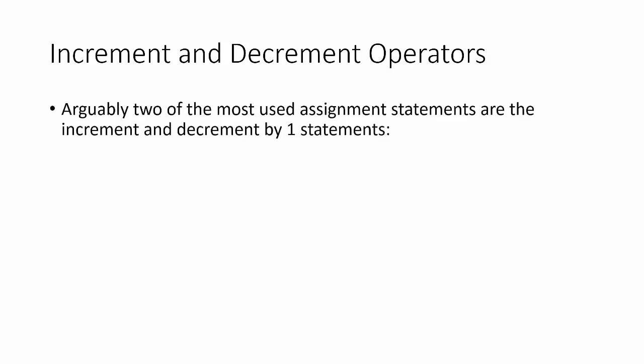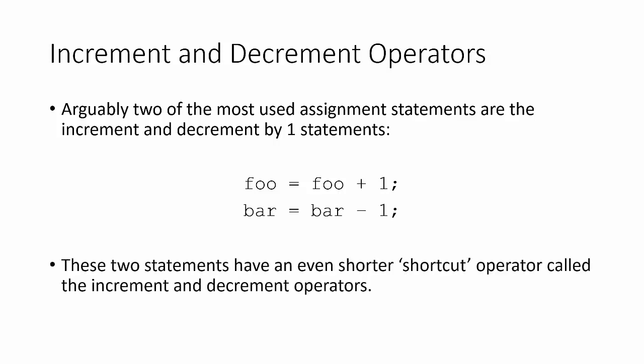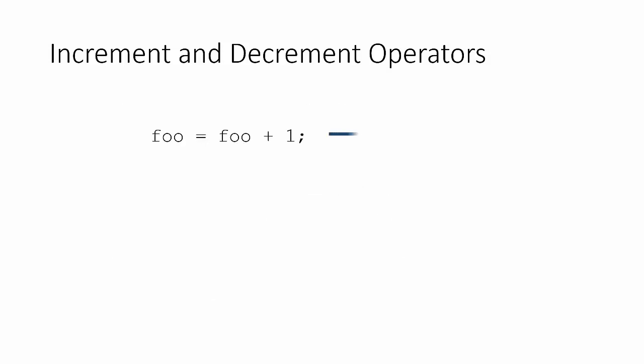There are two types of assignment statements that happen all the time: increase and decrease by one — foo equals foo plus one and bar equals bar minus one. Because these statements are used so frequently, there's an even shorter shortcut called the increment and decrement operators. Foo equals foo plus one can be shortened down to foo plus plus. The plus plus operator is exactly the same as taking the old value of foo, adding one to it, and reassigning it to foo.